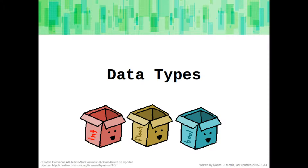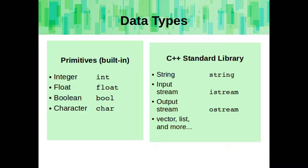So what are the data types? Here are some, but not all, of the data types that are part of C++. Some of the built-in or primitive types are integers, floats, booleans, and characters. The C++ standard library also has data types such as strings, input and output streams, and data structures like vectors and lists — but that's for later.